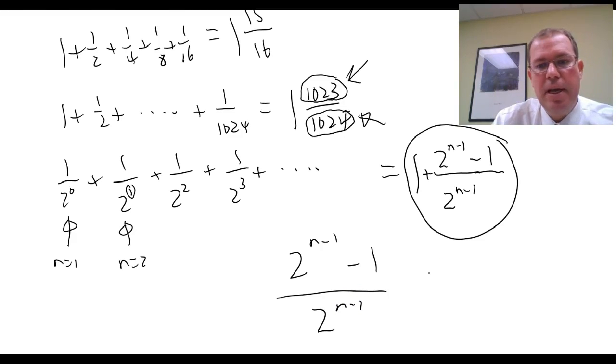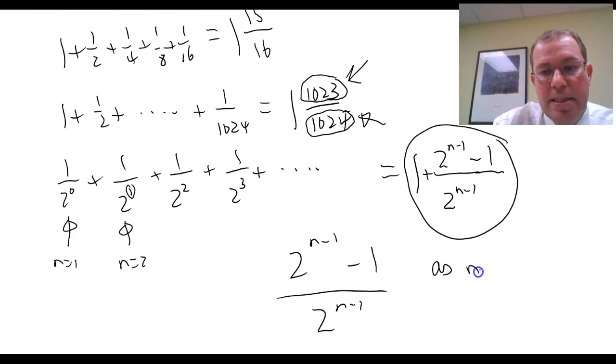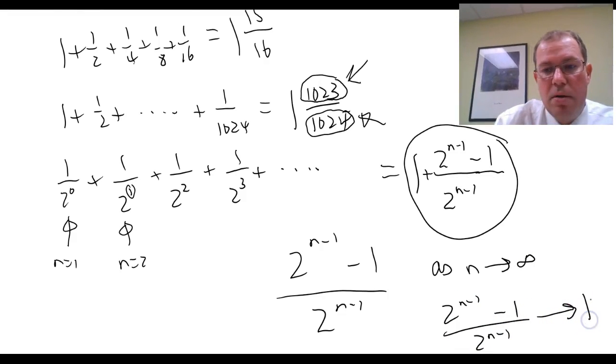So what she actually was doing as an 11-year-old was thinking about limits, and she realised that as n goes to infinity, the limit of 2 to the n minus 1 minus 1 over 2 to the n minus 1 tends towards 1, and hence the answer is 1 plus 1, and it's 2.